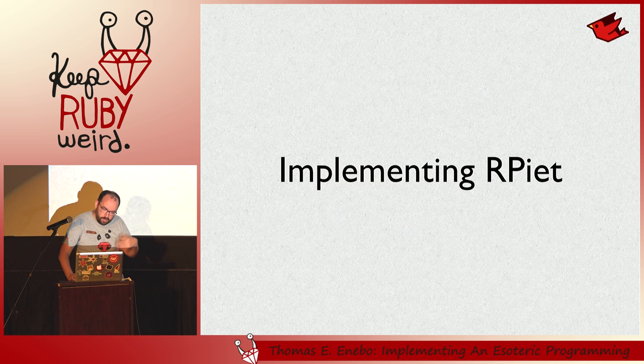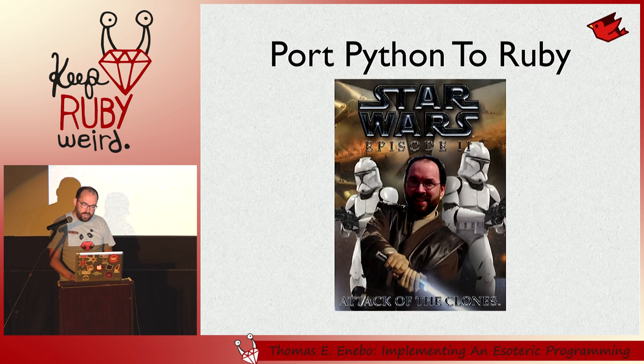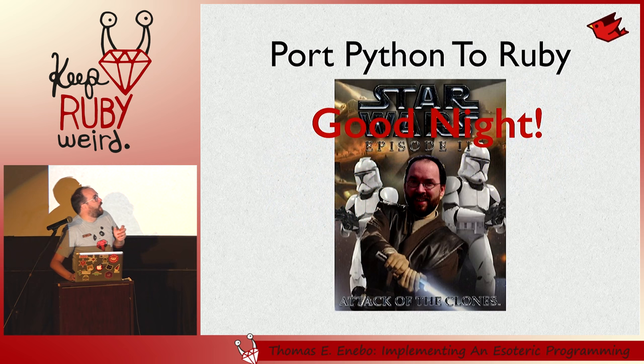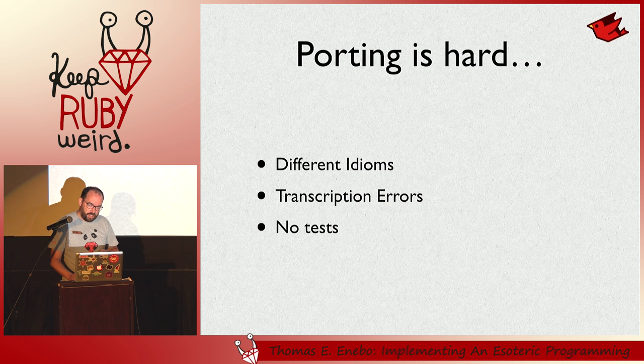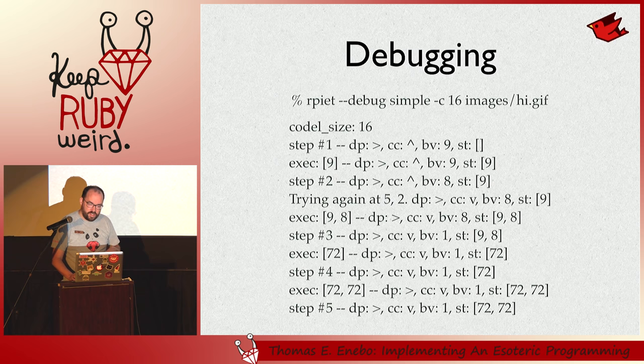If you kept making the image larger and larger, it would get better, but it would never be perfect. So the talk is actually about implementing RPiet. What I did is I ported Python to Ruby. As it turns out, I'm not so good at porting. I don't know Python particularly well and I made some errors. The file I started with was literally a single .py file. So what do you do when you first make a program that doesn't work? You start debugging it.